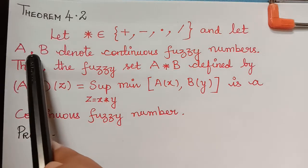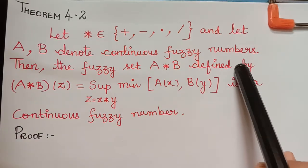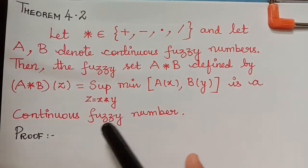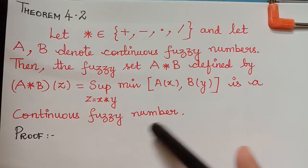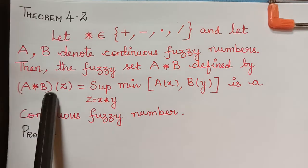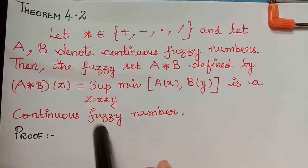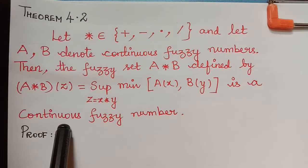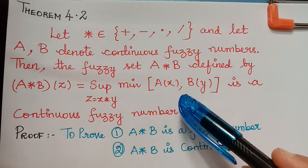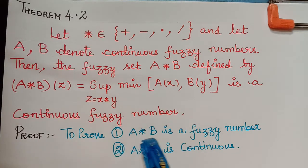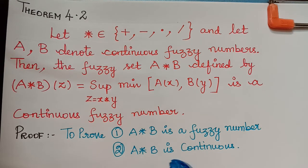Here it is given that A and B are continuous fuzzy numbers, and we have to prove that A★B(z) is also a continuous fuzzy number. To do this, we first have to prove that A★B is a fuzzy number, and secondly we have to prove that A★B is continuous. So we divide the proof into two parts. Now let us see the proof.